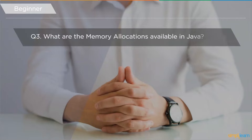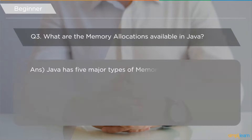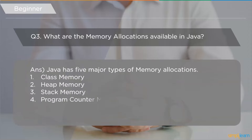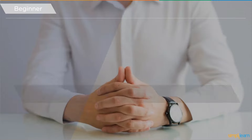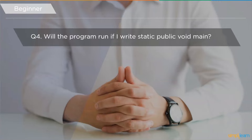The third question is: what are the memory allocations available in Java? Java provides multiple types of memory allocations, but the five major types most frequently used are: class memory, heap memory, stack memory, program counter memory, and native method stack memory.